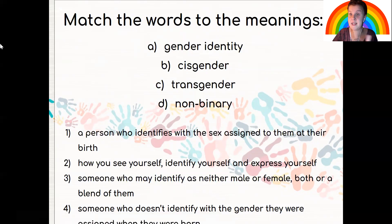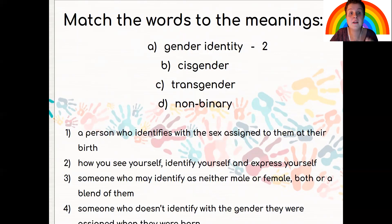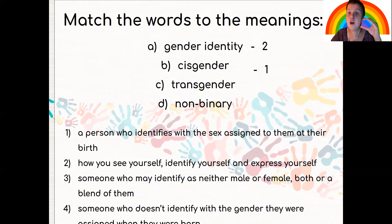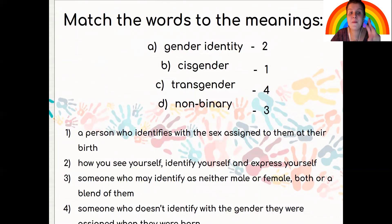Let's see if your answers are correct. What is gender identity? Number two — how you see yourself, how you identify yourself, and how you express yourself. B, cisgender? Number one — a person who identifies with the sex assigned to them at their birth. C, transgender? Number four — someone who doesn't identify with the gender they were assigned when they were born. And D, non-binary? Someone who may identify as neither male nor female, or both as a blend of them.